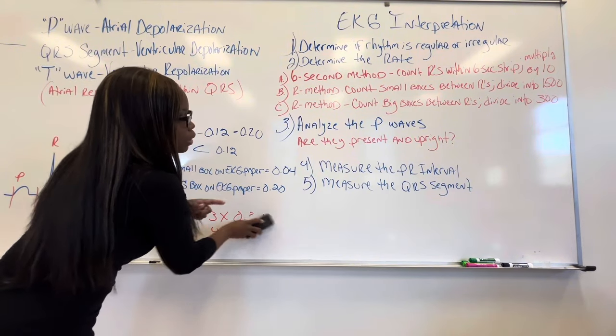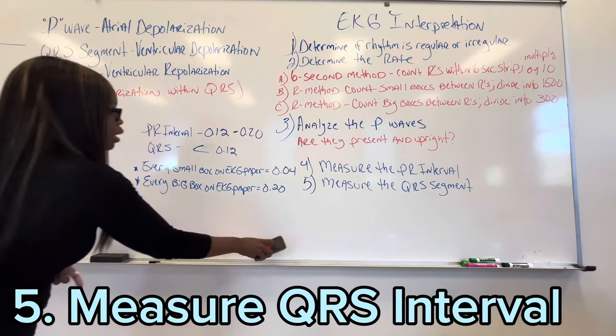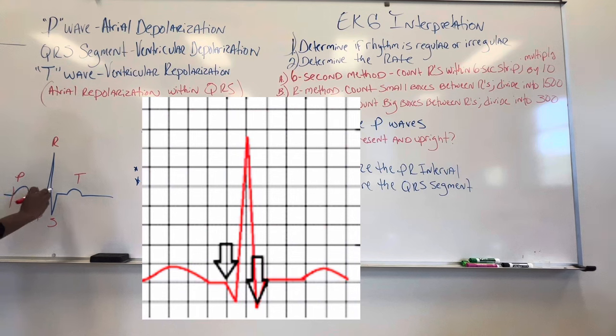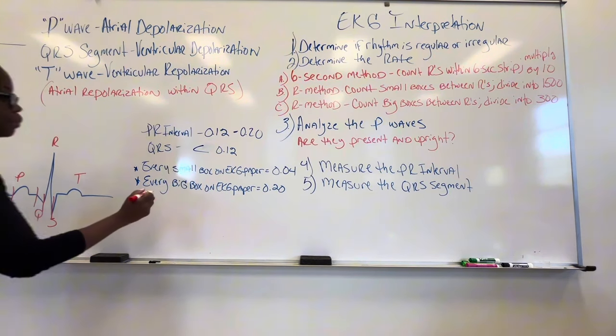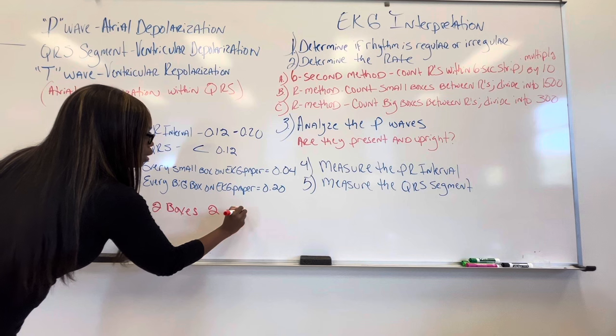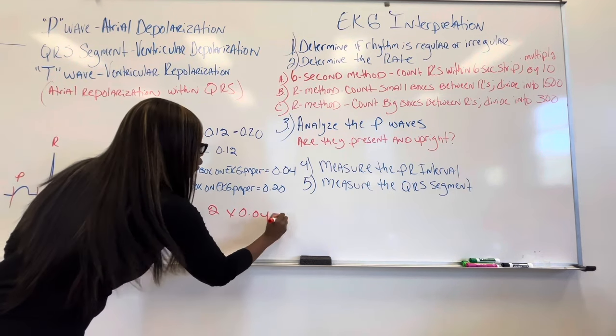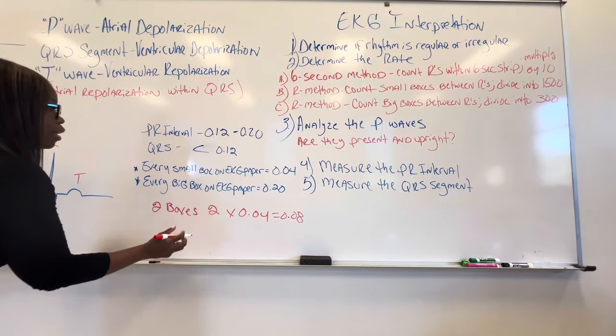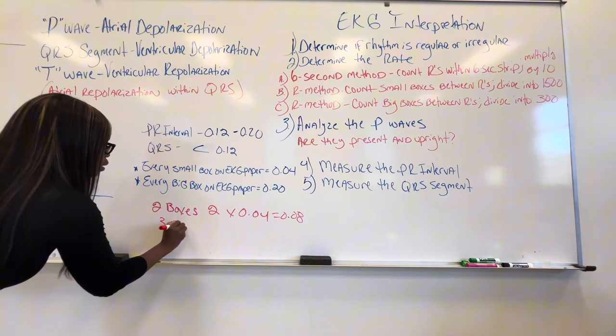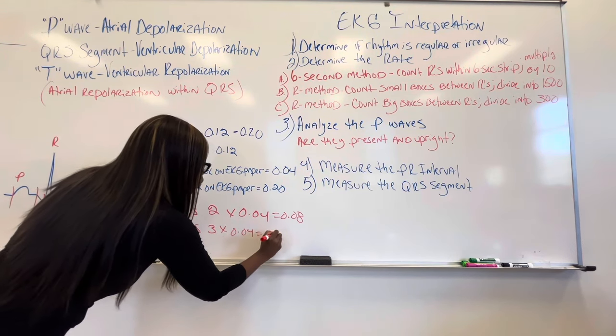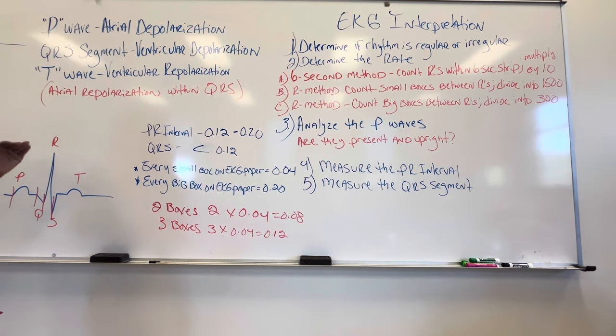Now, the last thing we're going to look at is the QRS segment and that should be less than 0.12. So to measure the QRS segment, we're going to start right there where the Q starts and then at the S. So that's the QRS. Now suppose we have two boxes there. So if we count two boxes, two times 0.04 is 0.08. Would that be normal? Yeah, because it's less than 12. If we count three boxes, what would that be? That's going to put us right at 0.12. So three times 0.04, that's going to be 0.12. And that's going to put us right there. And so this is the basic, this is really it guys.